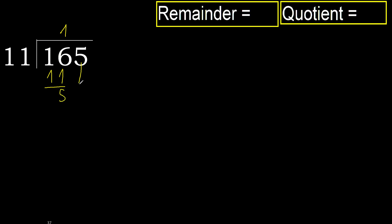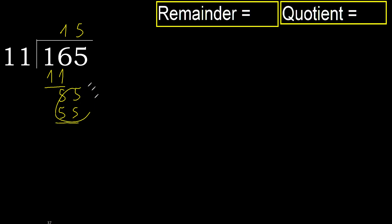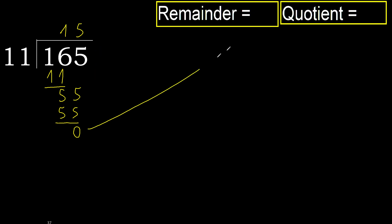Next: 55. 11 multiply by 5 is 55, which is not greater. Subtract. Result is 0. Next — there is no number, therefore finish it.